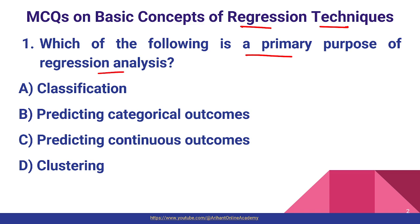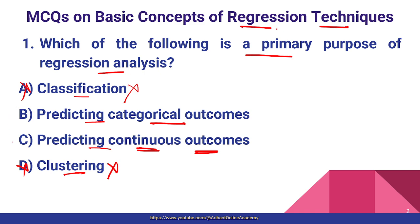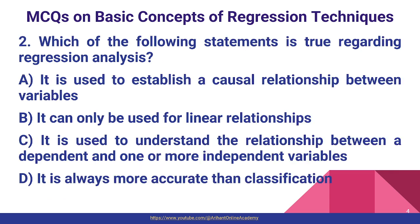Question number one: which of the following is the primary purpose of regression analysis? Option A: classification purpose. Option B: predicting categorical outputs. Option C: predicting continuous outcomes. Option D: clustering. Classification and clustering are not regression — clustering is part of unsupervised learning, and categorical output is for classification. Predicting continuous outcomes relates to regression, so option C is the correct answer.